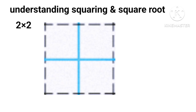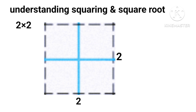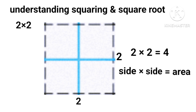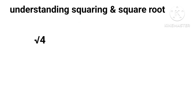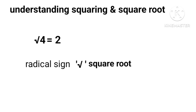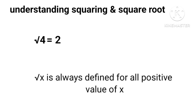Geometrically, we can find 2 times 2 by drawing a square of side 2 units and counting the number of unit squares, which is 4. Mathematically, we write 2 times 2 equals 4, that is side times side equals area of square. Hence, the area of a square of side 2 is 4, so the square of 2 is 4. In reverse, we can write square root of 4 equals 2. Here √ is the radical sign meaning square root. Therefore √x is always defined for all positive values of x.